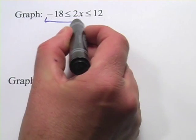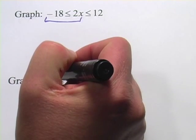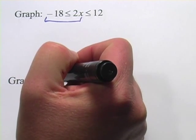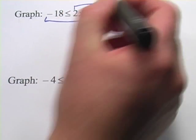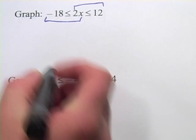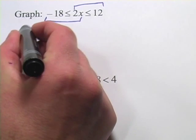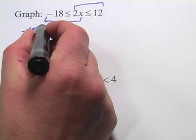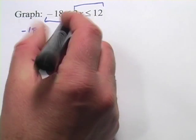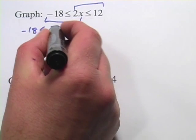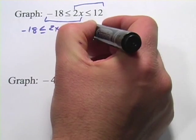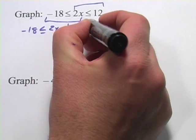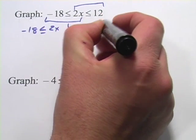is to break them into two problems. So there's one inequality to solve and there's the other. I would write that out like this: negative 18 is less than or equal to 2x, and 2x is less than or equal to 12.